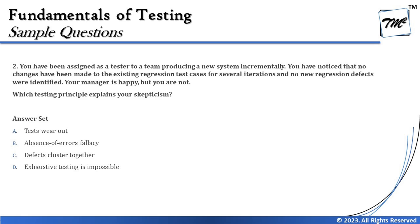The question is referring to an agile methodology context. The important highlight is that the existing regression test suite has not been revised over a period of time. Thinking back to the principles of testing, one principle talks about tests wearing out — the pesticide paradox. There is no point using the same test cases again and again as the product evolves over time. As new code is being added every sprint, the regression suite should keep being revised.